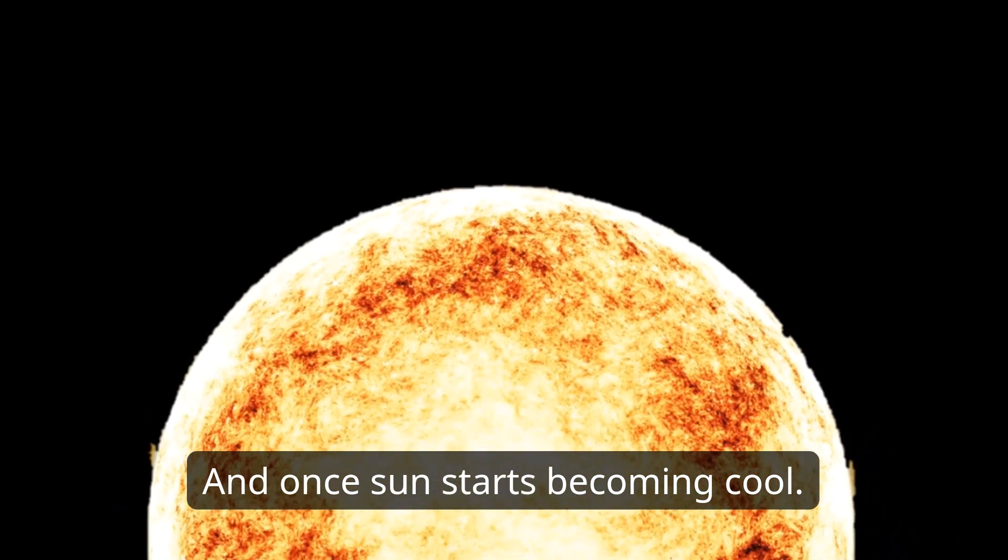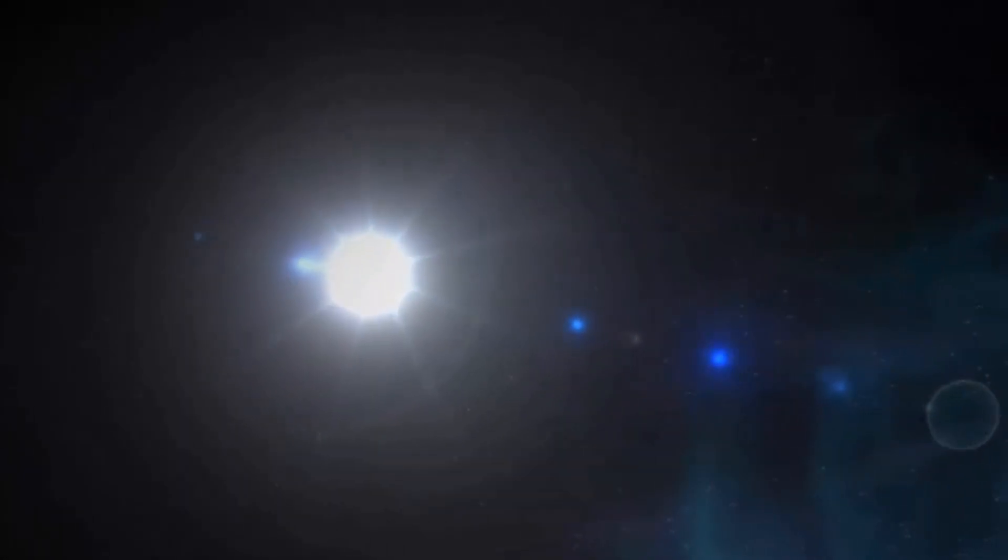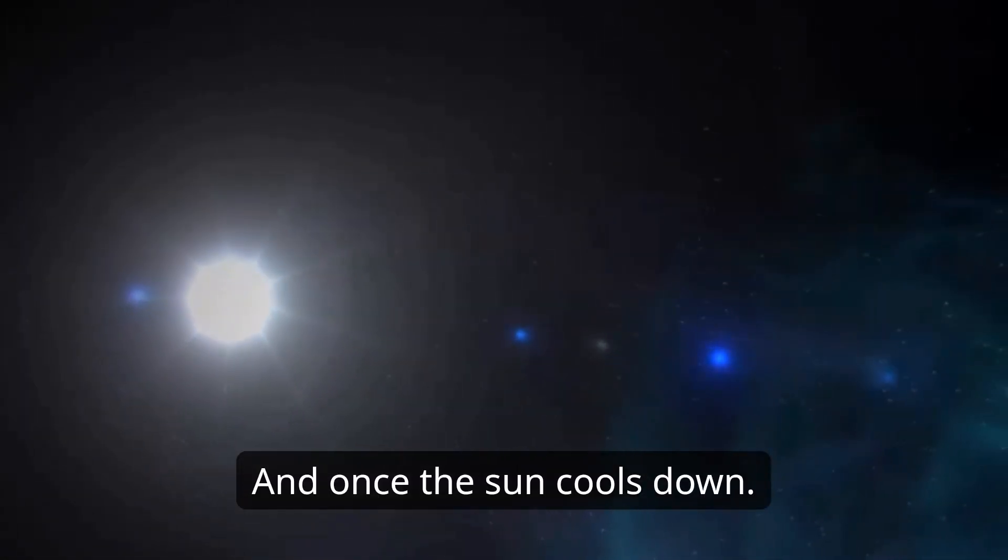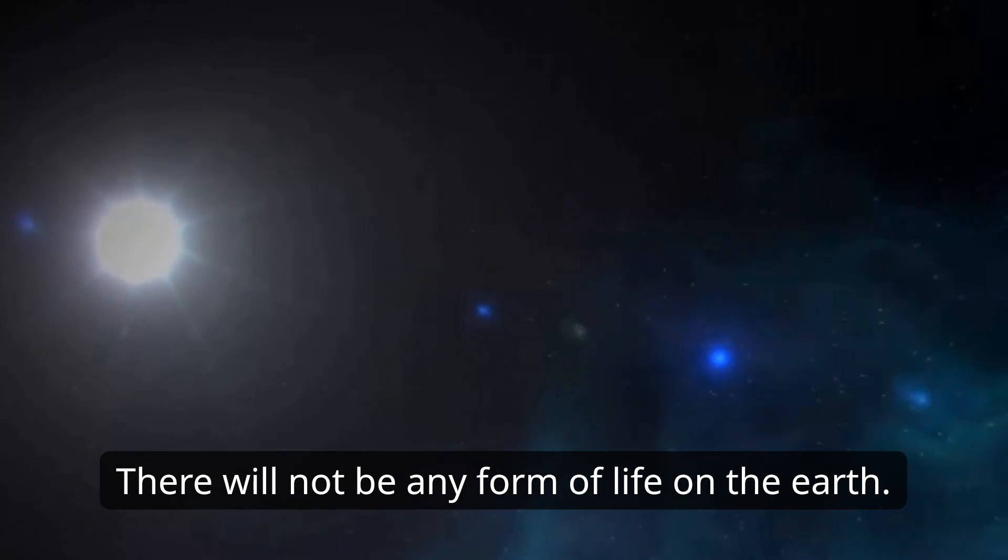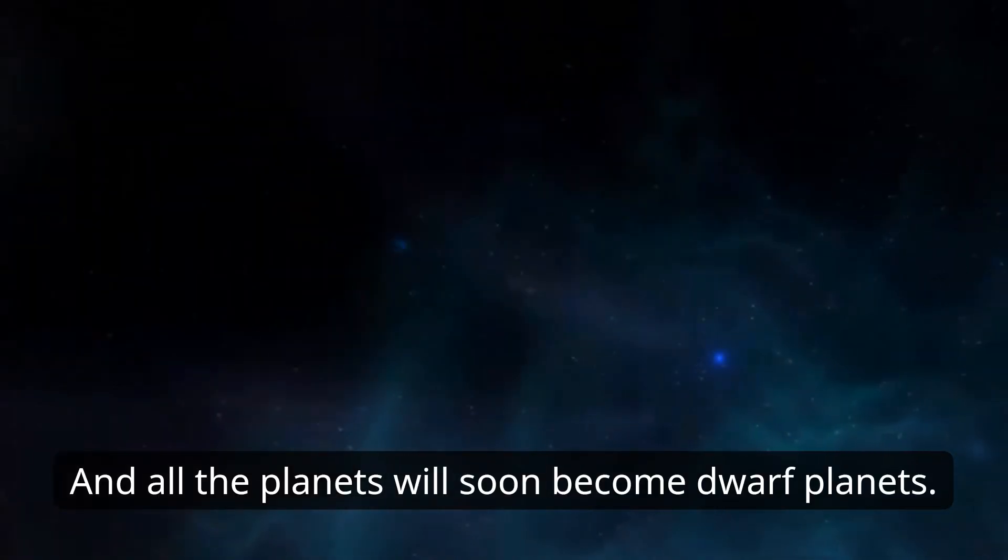Once the sun starts becoming cool, the whole solar system will be affected. Once the sun cools down, there will not be any form of life on Earth, and all the planets will soon become dwarf planets.